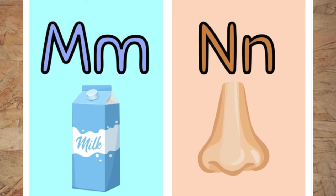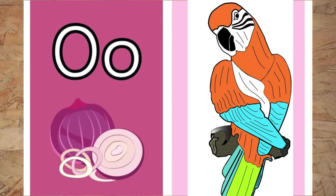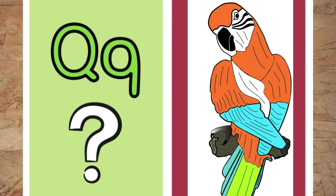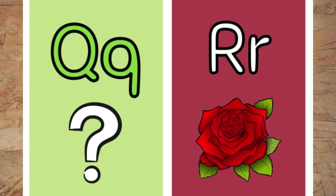N is for nose. O is for onion. P is for parrot. Q is for question. R is for rose.